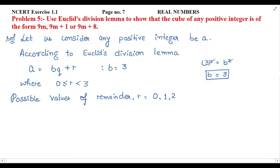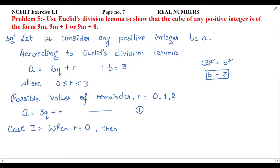If we talk about a equal to bq plus r, then we can put the bq value. So, the final equation we have to apply the cube to will be 3q plus r. This is equation 1. Now we have to change the total values of remainder. Case 1: when r equals 0, then a equal to 3q plus 0, so a equal to 3q.